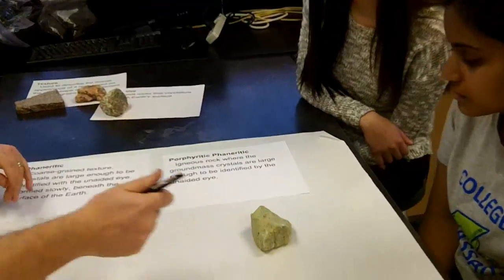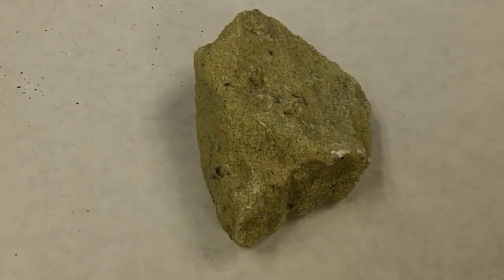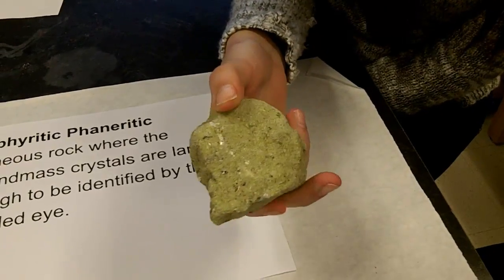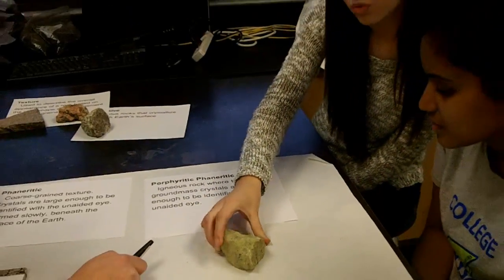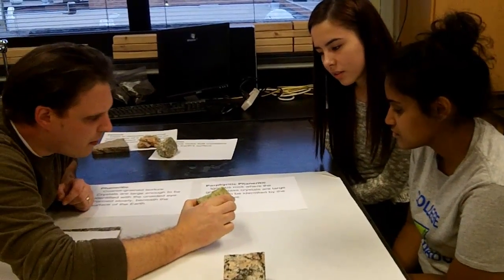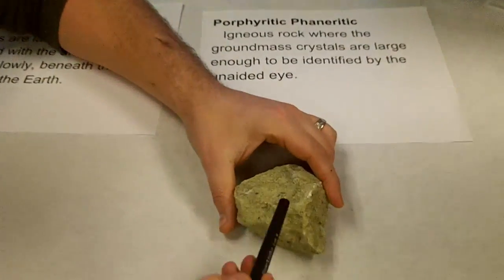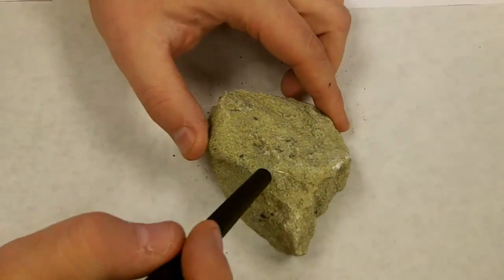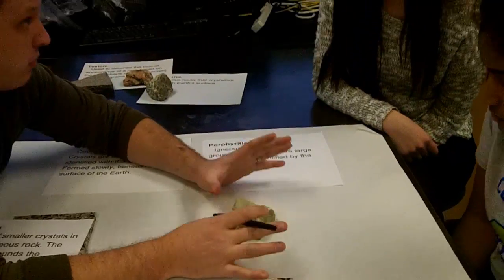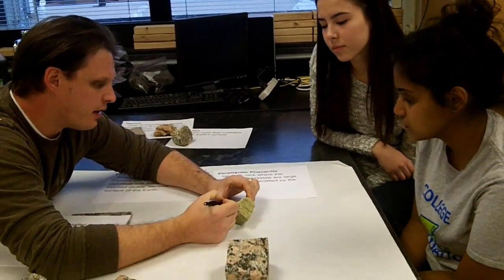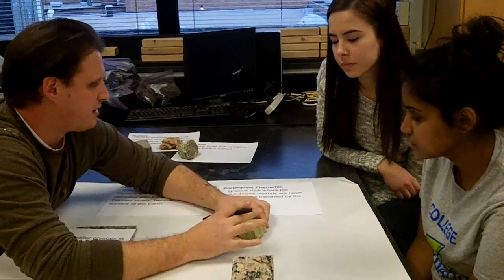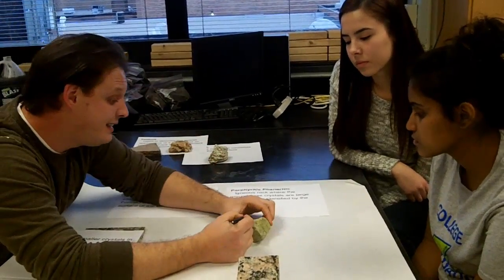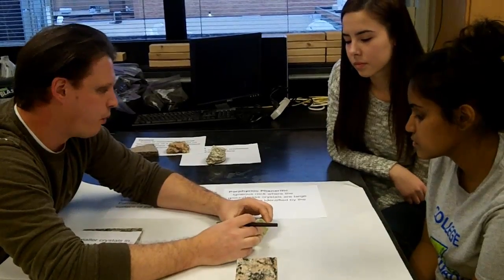What about this one? — Phaneritic. — Let's take a closer look — pick it up and turn it around. See those big guys in there? This one is tricky because the ground mass is all the same color — it's all green — so there's no contrast like black and white. But those crystals are big enough to be identified, and then there are even bigger ones. So this one would also be porphyritic phaneritic.